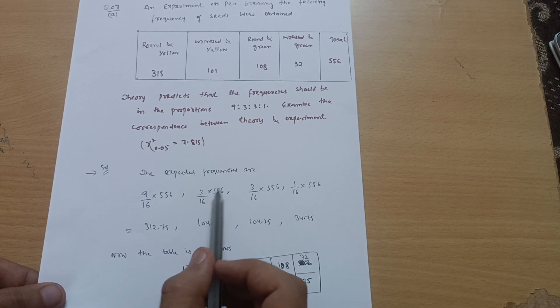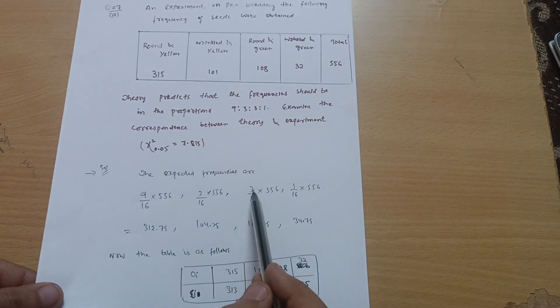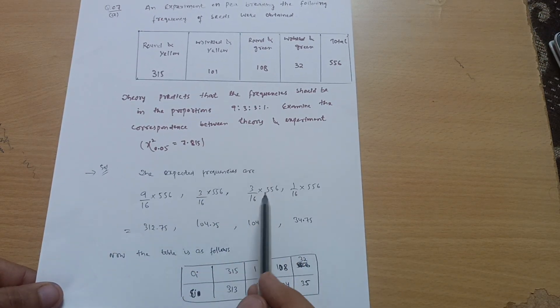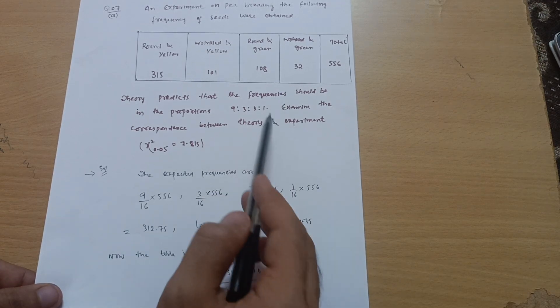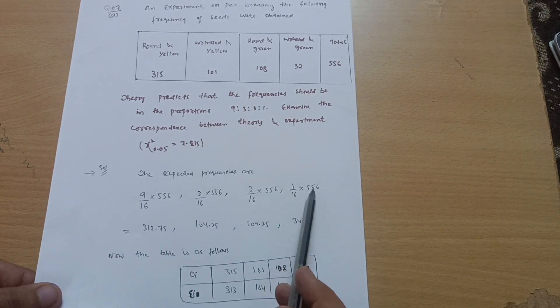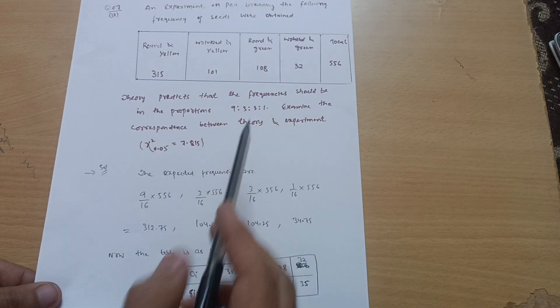3 by 16 again, here is the proportion 3 by 16 multiplied by 556, and 1 by 16 into 556. So this is for wrinkled and green.